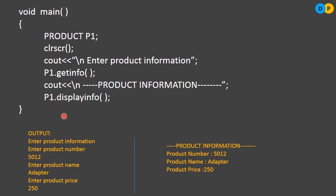If you run and execute this particular program, you can see this type of output. First it will ask the user to enter product information. The user will enter the product number, name, and price. After that, we display the product information once again back to the user by calling the display function using the object, which will produce the result. Thank you.